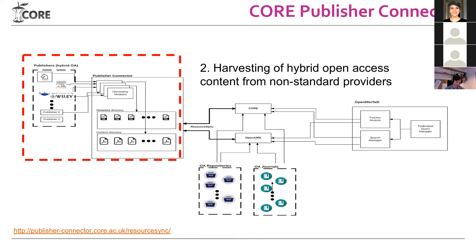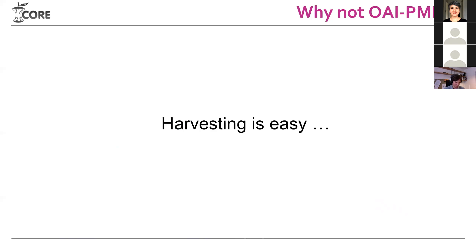The Publisher Connector is a tool which gathers content from individual publishers through publisher-specific implementations, and then exposes this data so that it can be ingested by CORE and OpenAIRE. One of the first questions we had to solve was: how should we expose this content so that CORE and OpenAIRE can ingest it? We could have used OAI-PMH since both can ingest using it, but we thought slightly differently.